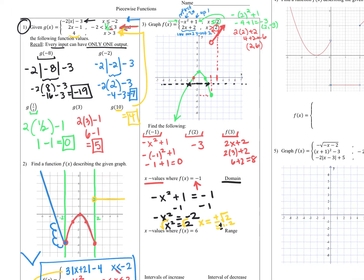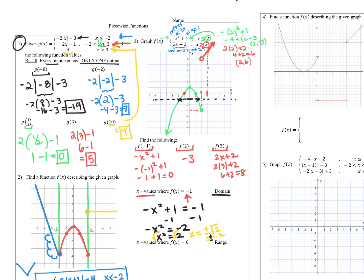For the domain, following the graph it goes left forever to negative infinity, does a bump, and continues at x equals two with a jump. Even though there's a hole at x equals two it's covered by the parabola, so the domain is negative infinity to infinity — it covers all numbers.